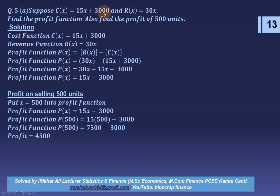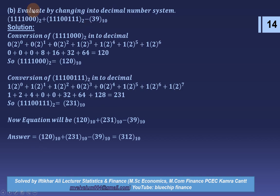Question 5 Part A: cost function is C(x) = 15x + 3,000 and revenue function is R(x) = 30x. Profit function = 30x − (15x + 3,000) = 15x − 3,000. For profit on 500 units: substitute x = 500: profit = 15 × 500 − 3,000 = 7,500 − 3,000 = rupees 4,500.